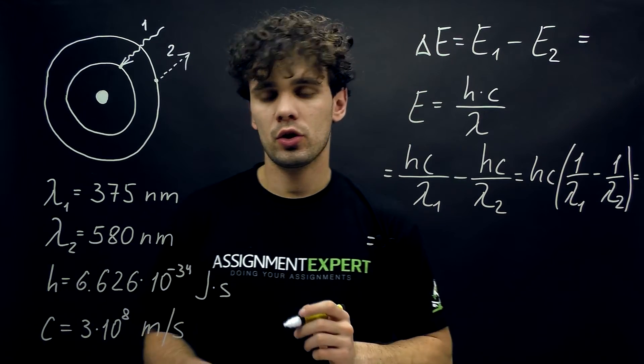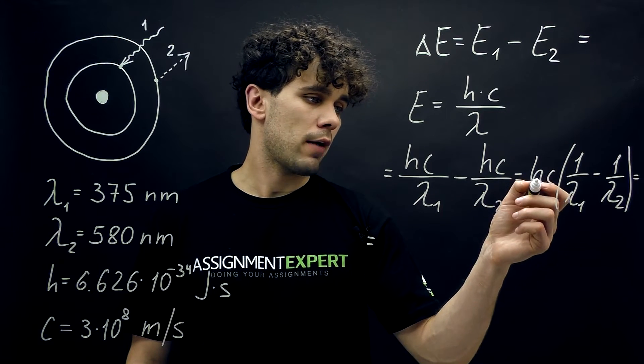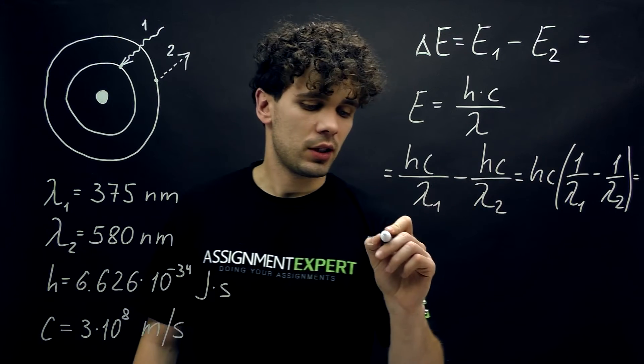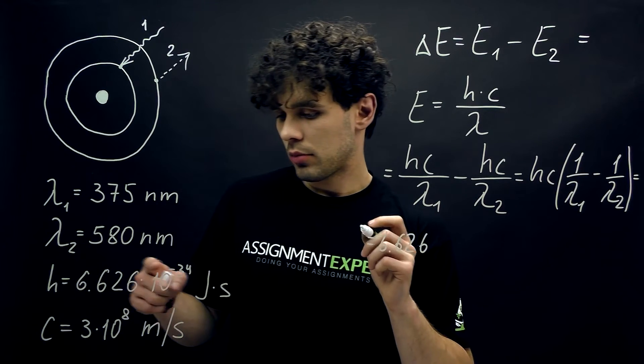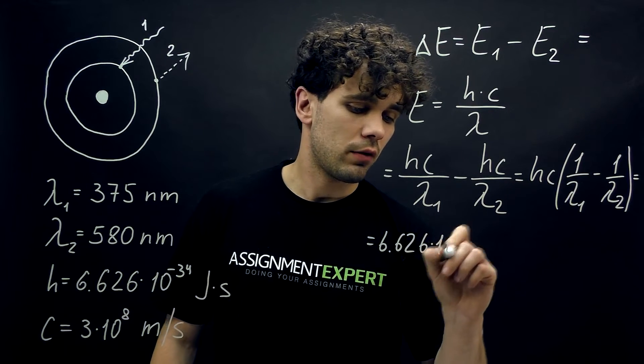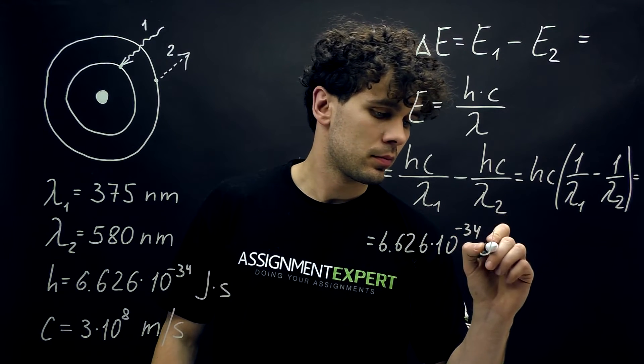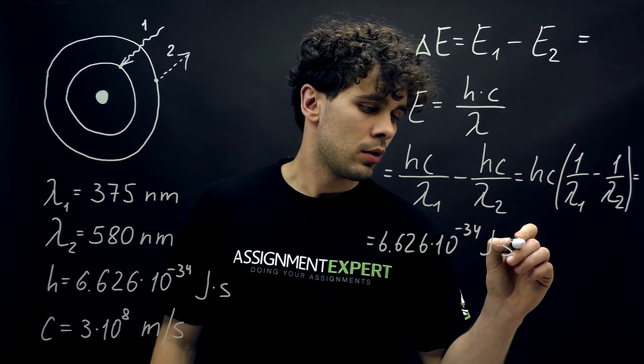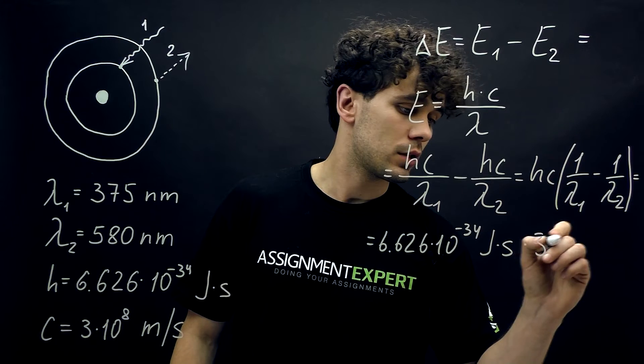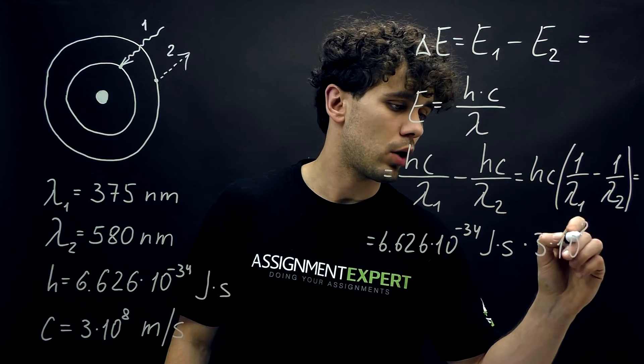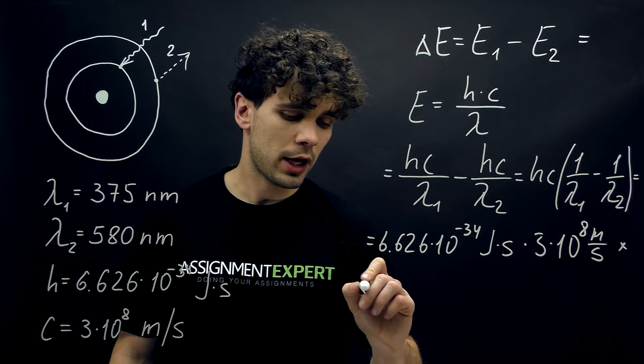And now we just need to put all the numbers into this formula. So first we have the Planck's constant h, which is 6.626 times 10 to the negative 34 power, and this is joules times seconds. Then we have the speed of light, 3 times 10 to the 8th power meters per second.